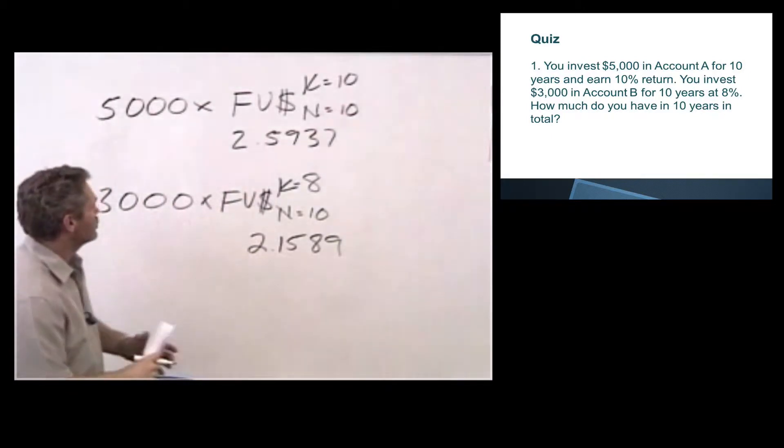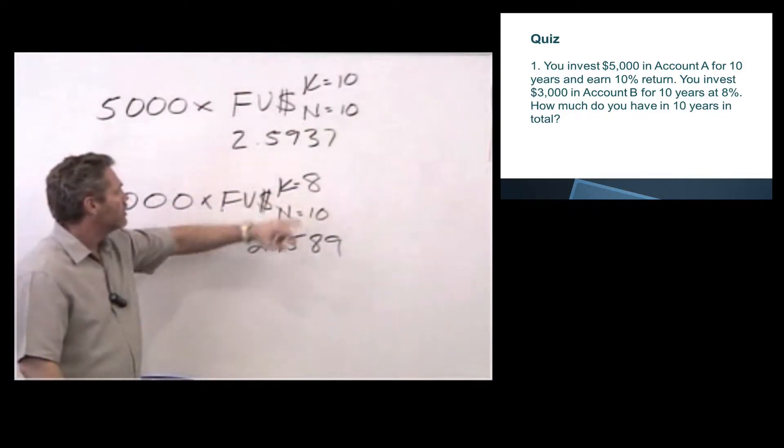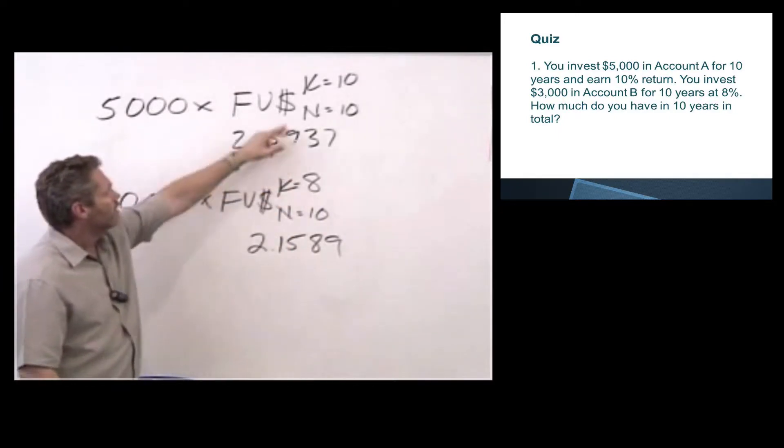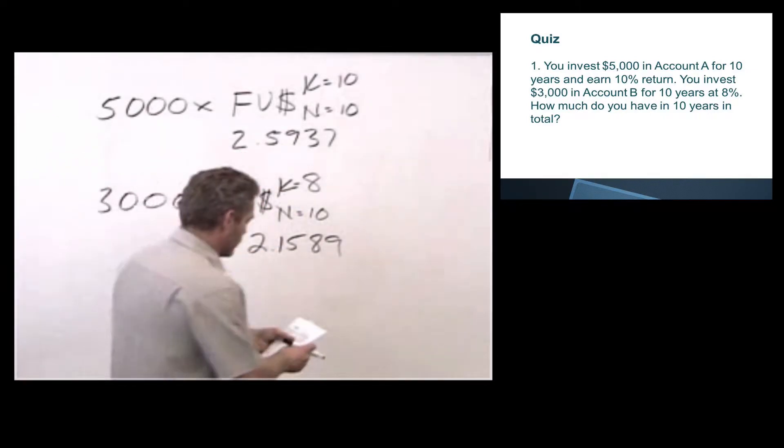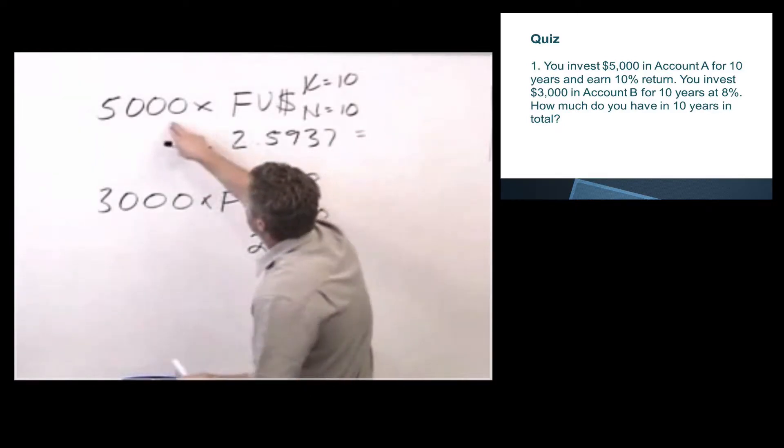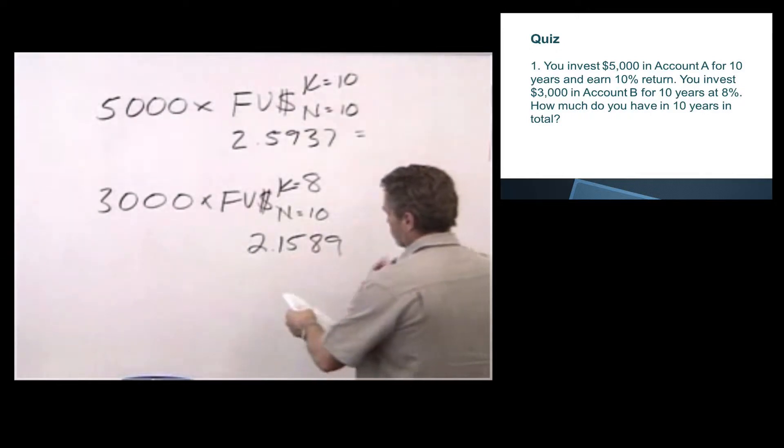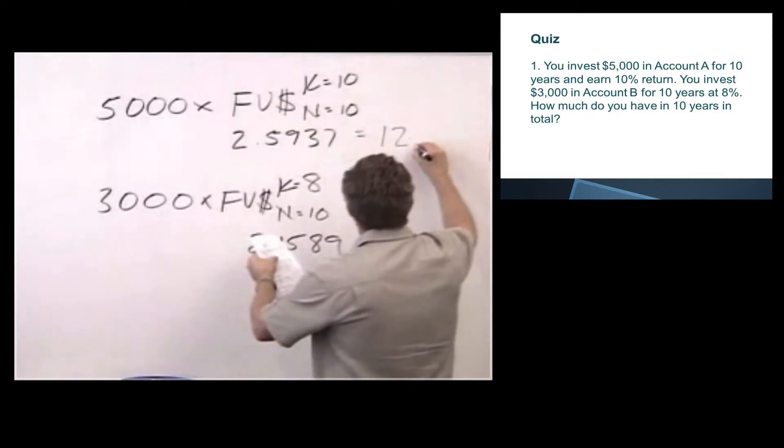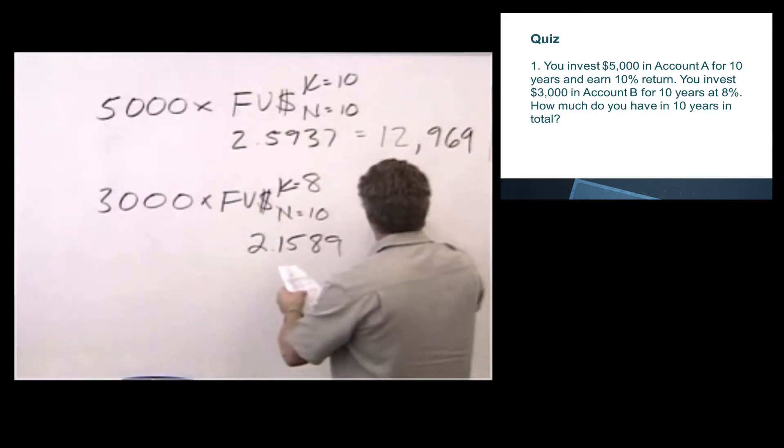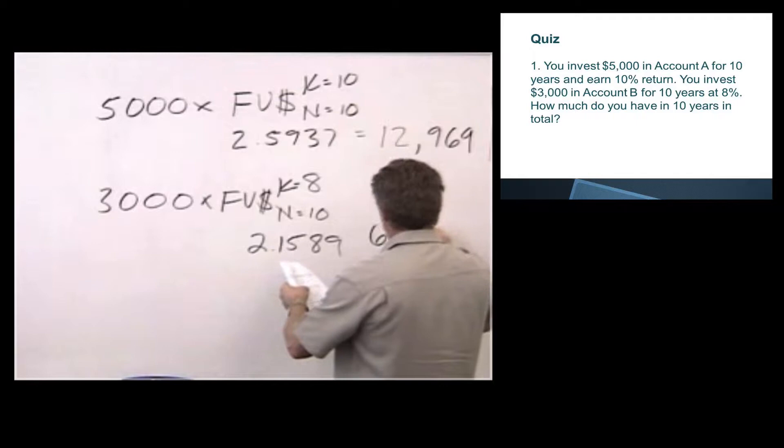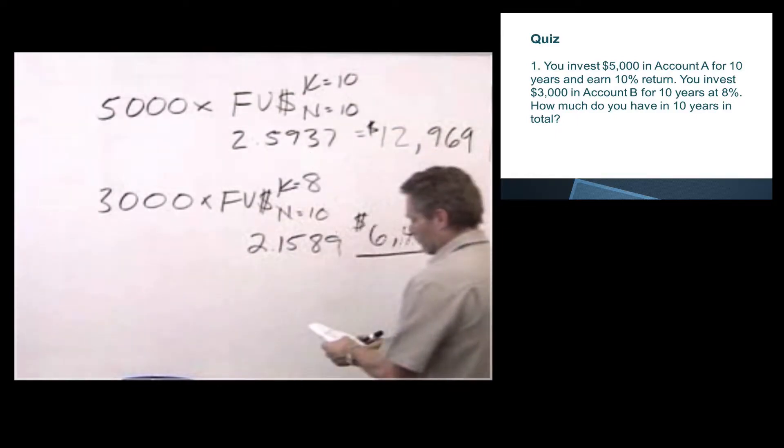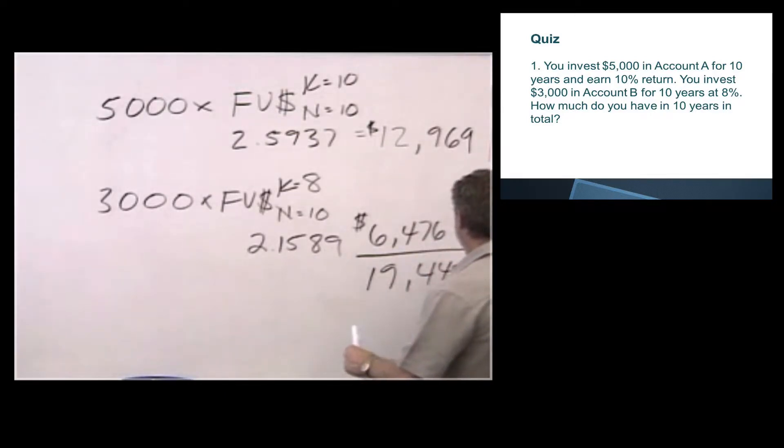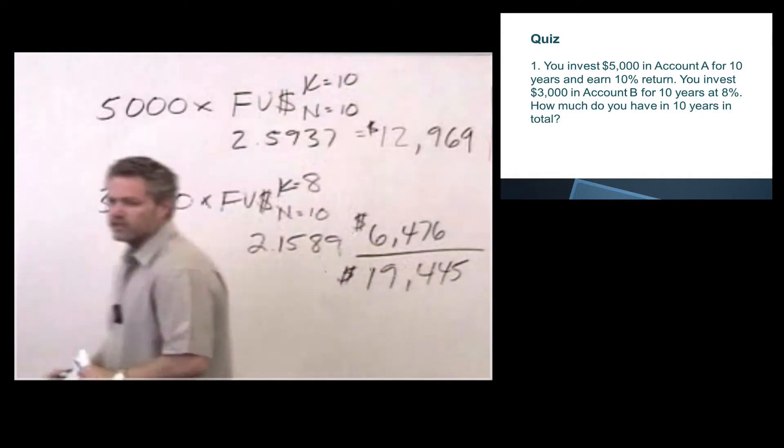Since we're investing and going into the future, if we earn a higher rate of return, the factor is going to be higher. And so my 10% rate of return certainly needs to be higher than the factor for an 8% rate of return. We're then going to multiply 5,000 times my factor, 3,000 times my factor, and get 12,969 and 6,476 for a total value of $19,445. And that's the answer to question one.